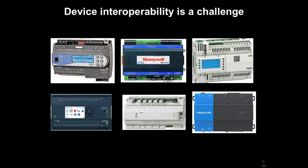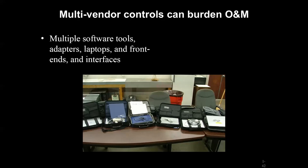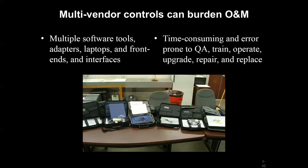We also worry about device interoperability. There are many different makes and models with similar device capabilities that may not play well together. What we want to do is have open bidding, but avoid situations where every building or subsystem has its own laptop, set of software, plug-ins, and cables to interface with that particular system. We can expect this would heavily overburden an O&M staff and eventually lead to performance issues because of the difficulty in maintaining our systems.